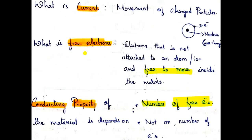So, when a charged particle moves from one place to another, that is current. Every atom has charged particles. The reason why some materials act as conductors and some as insulators or semiconductors is dependent on the number of free electrons, not the total number of electrons. When an electron is detached from the atom and moves freely within the boundary of the metal, that freely moving electron is known as a free electron.